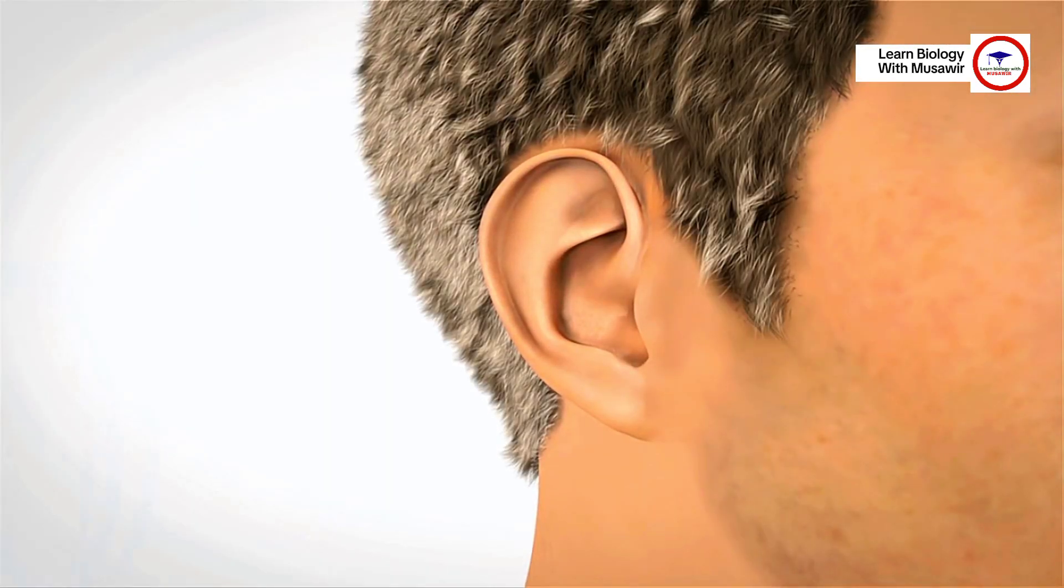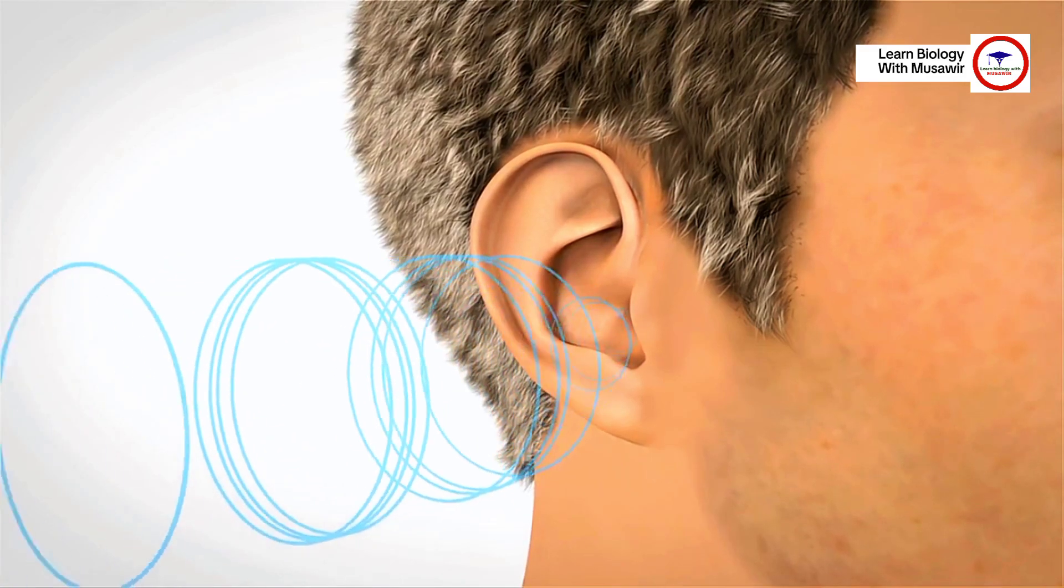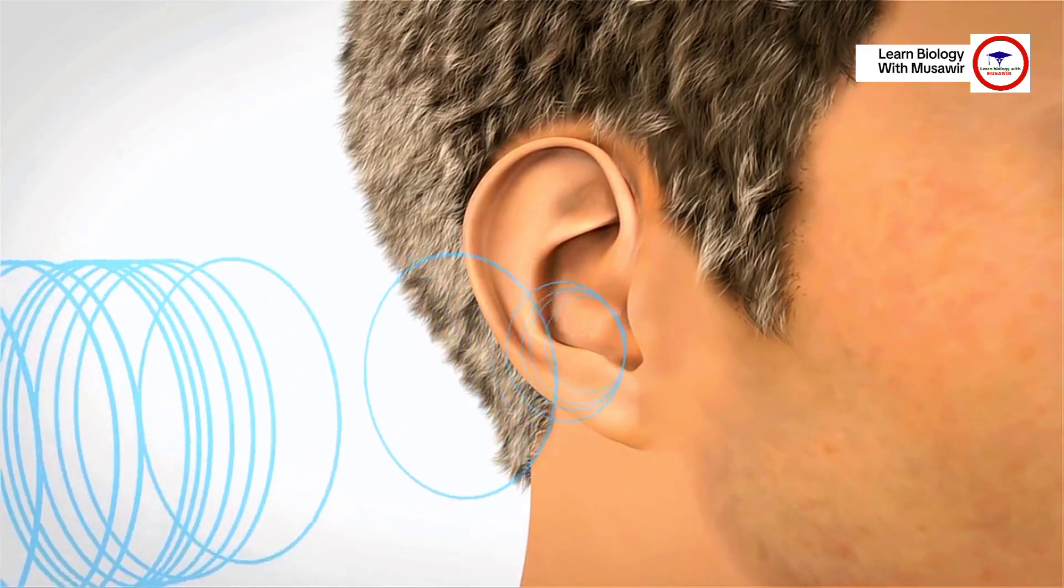Ears are constantly active. They pick up sound waves and change them into information that the brain can interpret, such as music or speech.